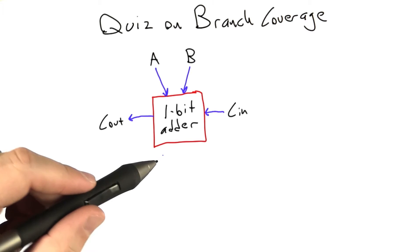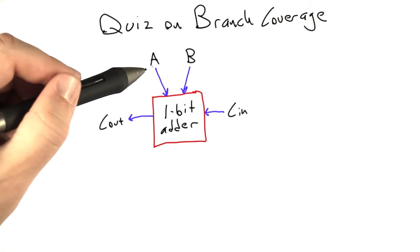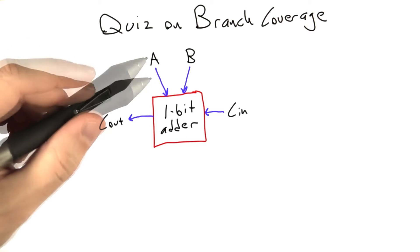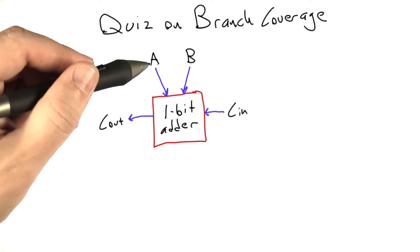So the way the adder works is it takes two inputs, A and B, and A and B are bits, so they're valued at either 0 or 1. In Python we're going to represent the 1-bit as true and the 0-bit as false, so we're going to use Boolean logic to implement this.